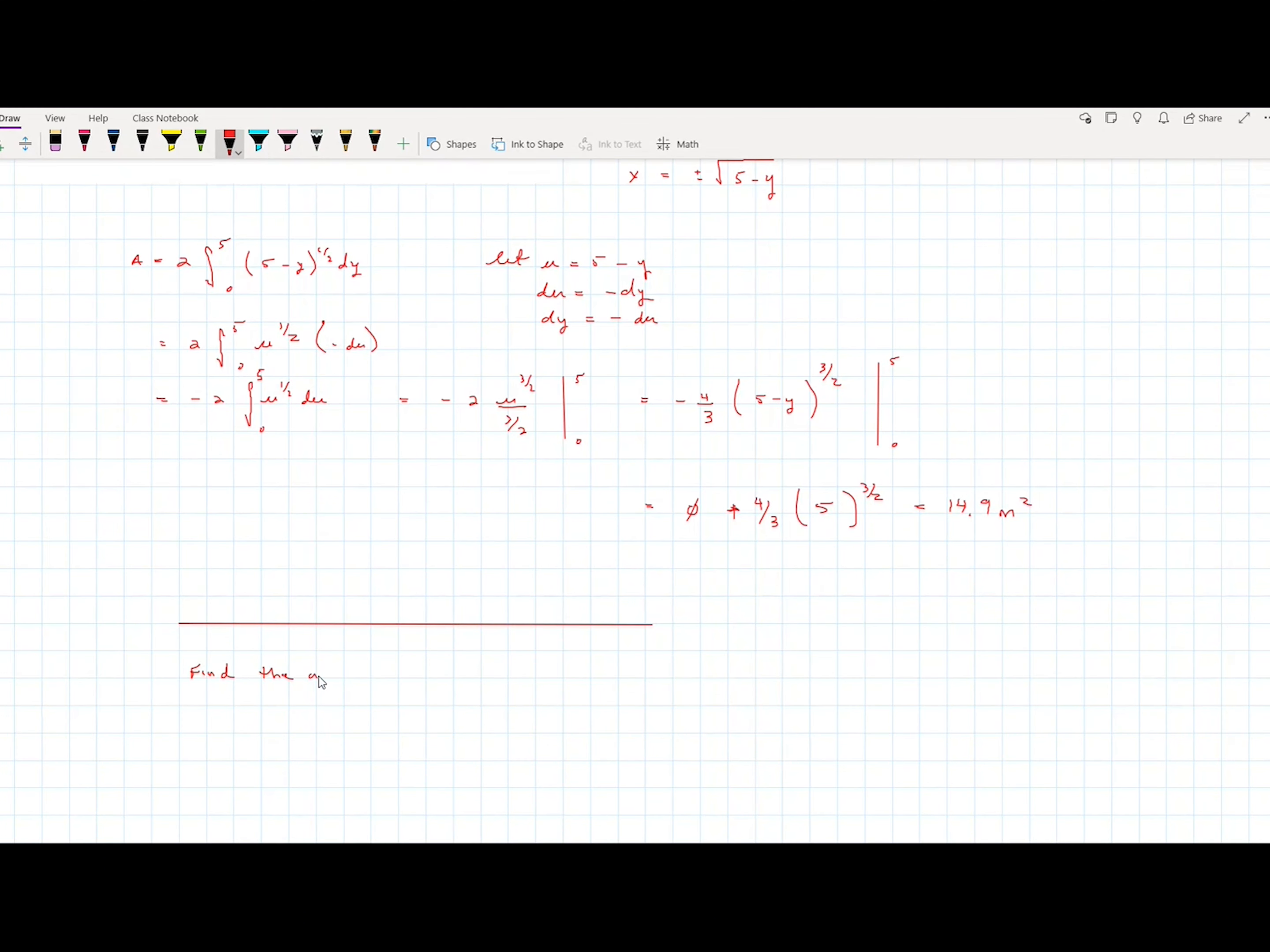The area bounded by, let's say, the x-axis, so y equals 0, and the equation that they give you there, y equals 5 minus x squared.